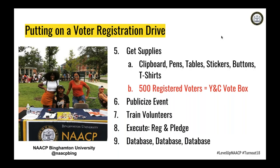Step five: make sure you have supplies — clipboards, pens, tables, stickers, buttons, t-shirts. If you get 500 voter registration forms in by your second week, we will give you a Youth and College Vote Box containing t-shirts, stickers, pins, pencils, pens, and flyers. We want to see that first commitment of 500 registered voters. If a person does voter registration for one hour a day they can get five to seven people — Monday through Friday that's 25 people. With 10 volunteers, that's 250, so by week two you should have 500.